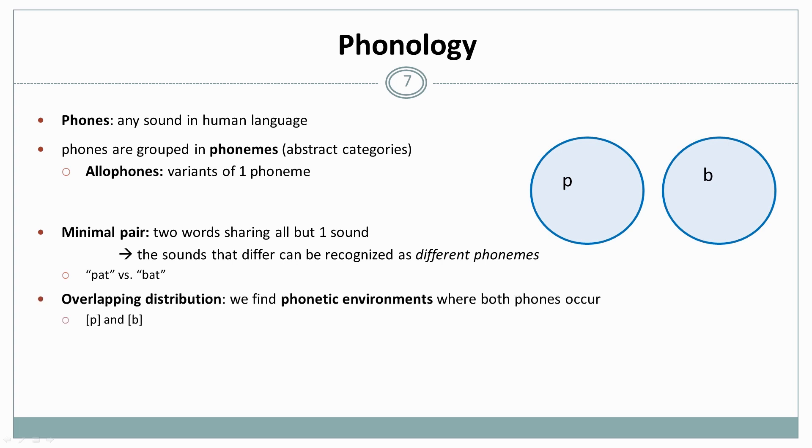And when we find such a minimal pair, we can say that they are in overlapping distribution. This fancy linguistic term means that we find phonetic environments where both phones occur. And phonetic environments just means the sounds before and after. And complementary distribution is the term for saying that they are not in overlapping distribution. So we do not find such a case where the phonetic environments overlap. And then they are typically allophones of the same phoneme.